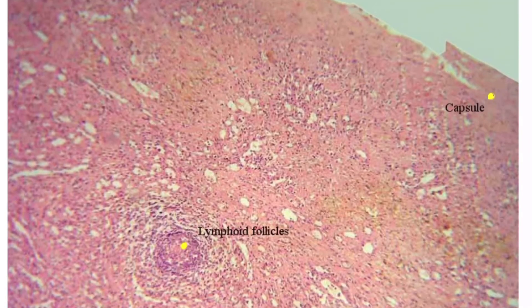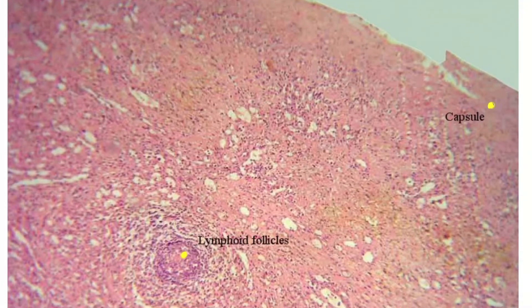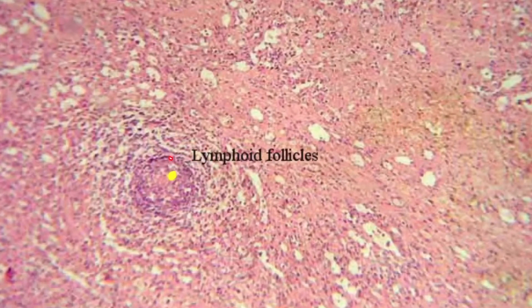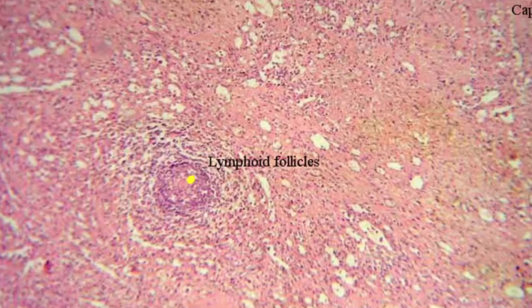Now let's see the histopathological features. Here is the histopathological slide of the hyaline cyst of the spleen. The first feature will be the central arterioles of the lymphoid follicles with atrophic changes. Here you can see there are atrophic changes in the central arterioles of the lymphoid follicle.